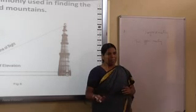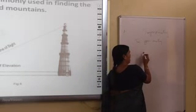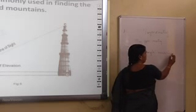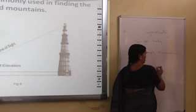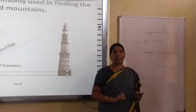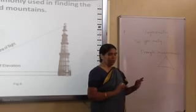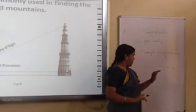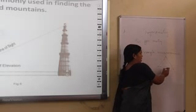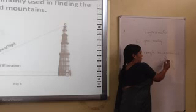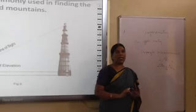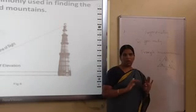Three angles means triangle. So it is basically a triangle measurement. Triangle measurement means we are finding the relations between sides and angles of a triangle. If this is ABC with angles theta 1, theta 2, theta 3, the relation between sides and angles of the triangle, that is basically trigonometry.